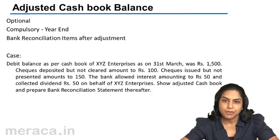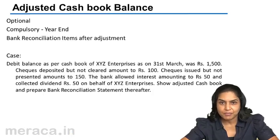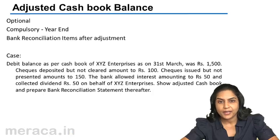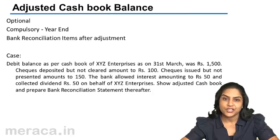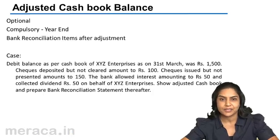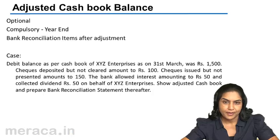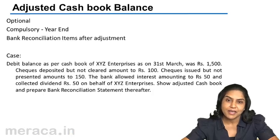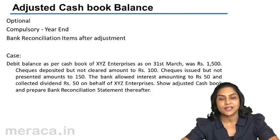So sometimes we first prepare a reconciliation statement — a bank reconciliation statement — identify the causes of the differences, then go ahead and make the adjustments we need in the cash book to arrive at an adjusted cash book balance. It may be noted that this adjusted cash book balance will not be the same value as that in the bank statement.